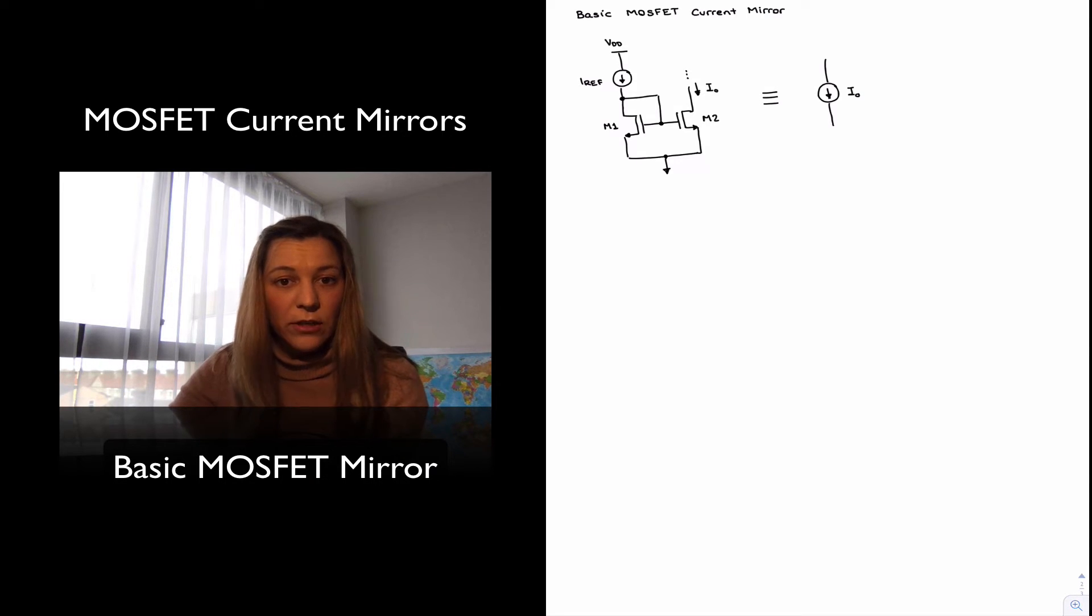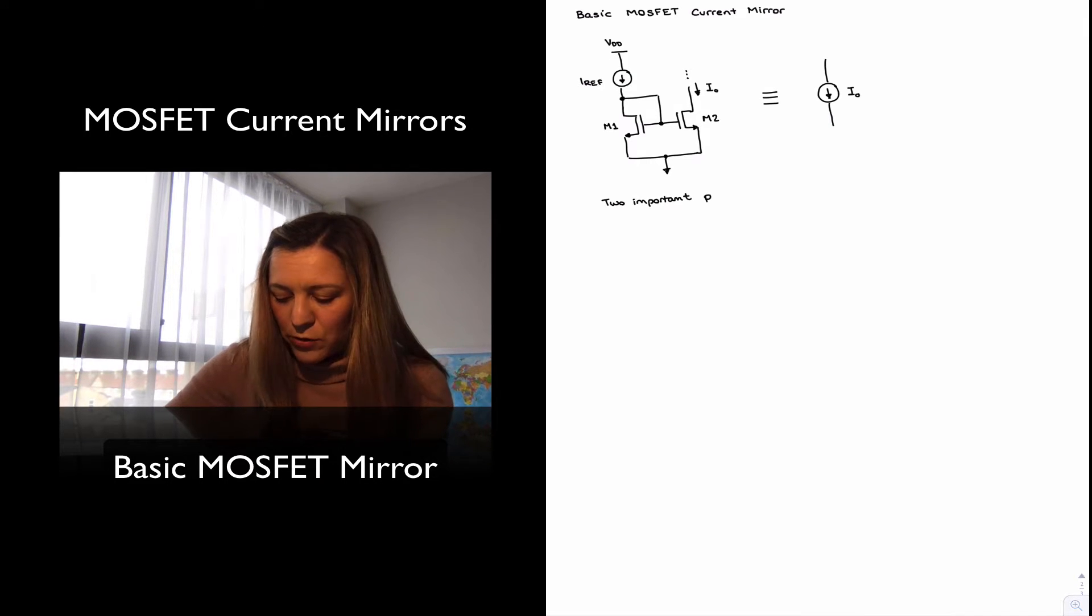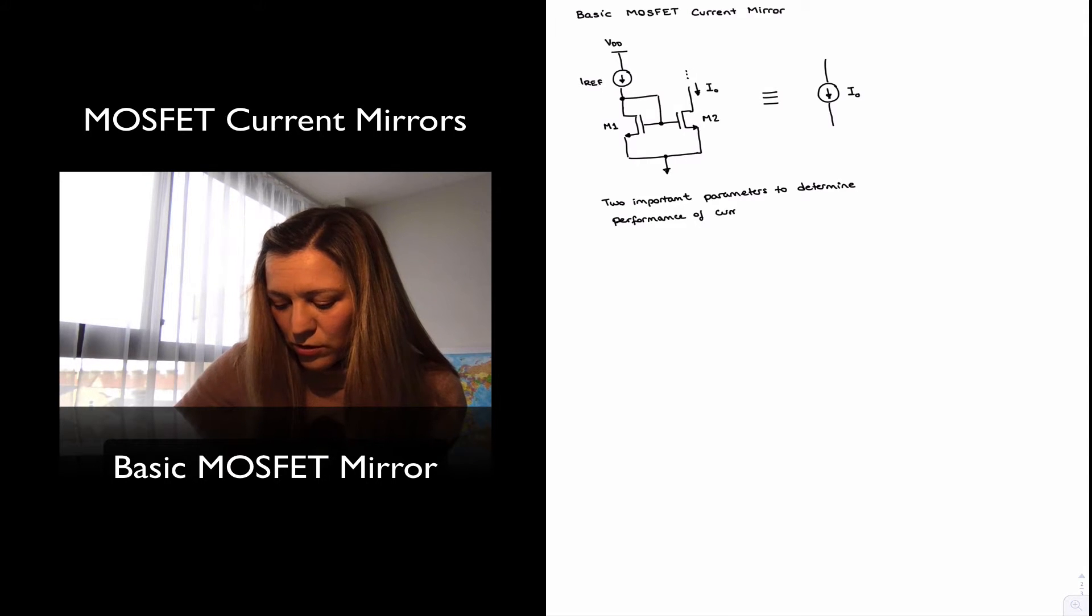This entire circuit can be represented as a current source itself of value I out. And so I've said this entire circuit is equivalent to just having an I out source. Typically there are two things that are important when we are designing any current source, two parameters that determine the performance of the current source.